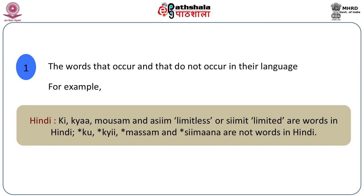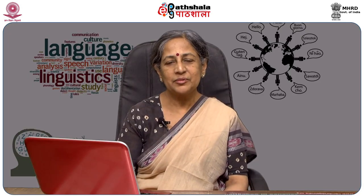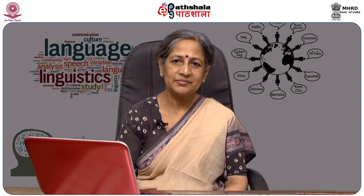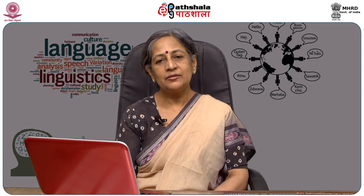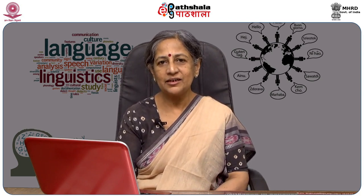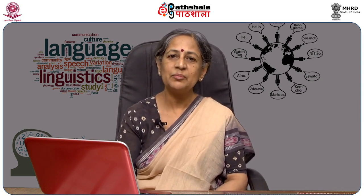You can take similar examples from Hindi. We know that there are words like 'ki' in Hindi — 'usne kaha ki'. But there's no word 'ku', except as a suffix. 'Kya' is a question word in Hindi, but there's no word 'ki' as a question word. 'Maasam' is an occurring word in Hindi; 'maasim' is not. 'Aseem' and 'seemit' are words of Hindi — they mean 'limitless' and 'limited' respectively. But you cannot make a verb out of 'seema' and say 'seemana' in Hindi, although there's nothing wrong with it. So speakers of a language know which words actually occur in that language and which words do not, even though they may be potential words.